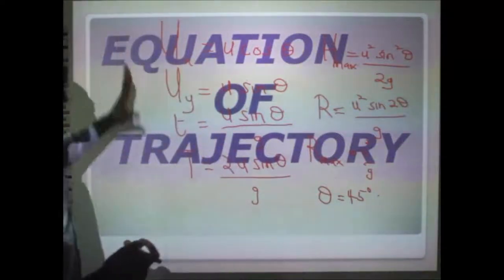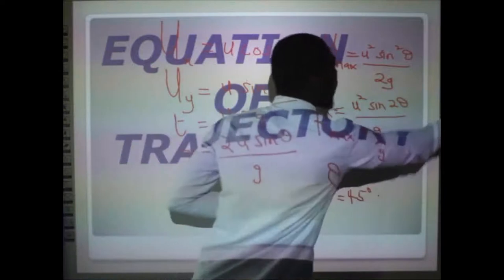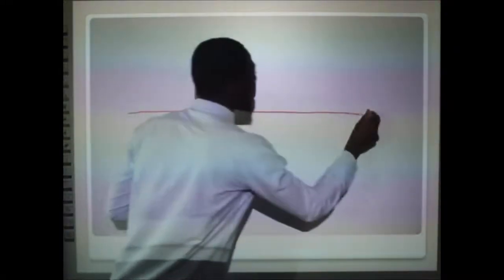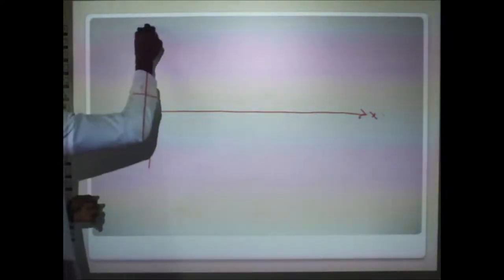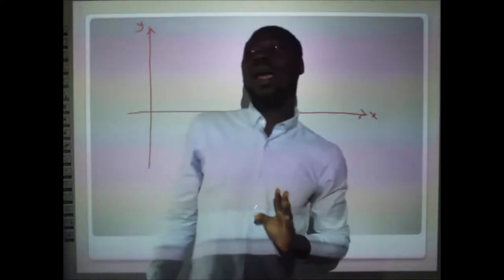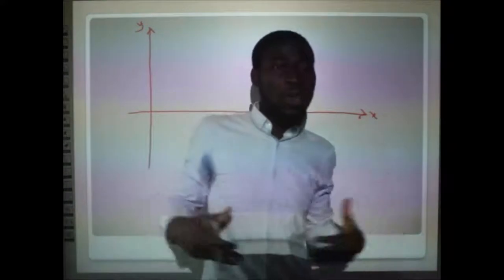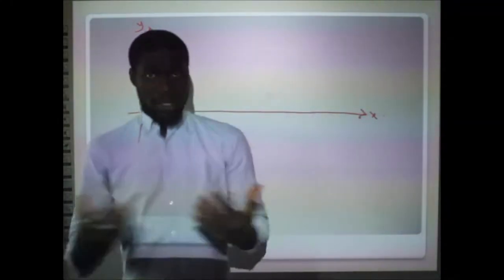Now we move to the equation of trajectory. Projectile motion consists of two independent motions: the constant horizontal motion along the x-axis, and the vertical motion of free fall due to gravity along the y-axis. We are going to use these two independent motions to derive the equation of trajectory.